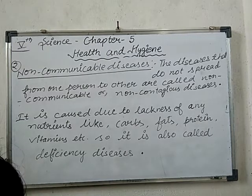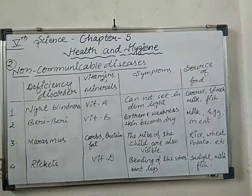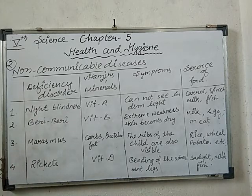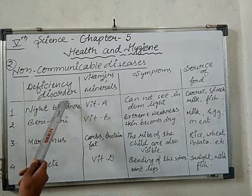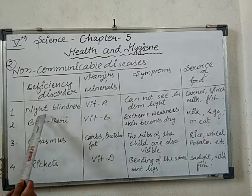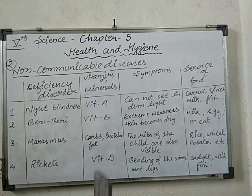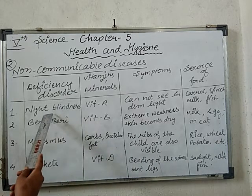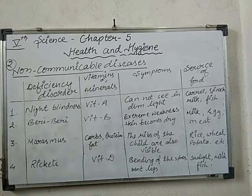Some of the deficiency diseases I am going to explain. Here I have listed some disease names and their symptoms. The first deficiency disorder is night blindness. Night blindness means a person cannot see anything in dim light or cannot see anything at night. How is it caused? Night blindness is caused due to the deficiency of Vitamin A in our body.